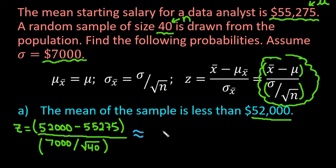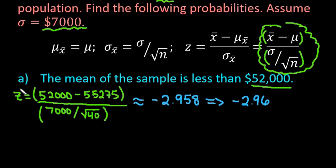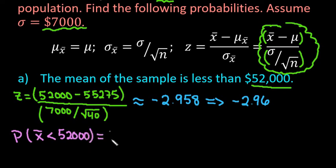When I plug this into my calculator, I end up with negative 2.958. When using a z-table, you round to two decimal places, so that gives us negative 2.96. So the probability that our sample mean is less than $52,000 is going to be equal to the probability that our z-score is less than negative 2.96.